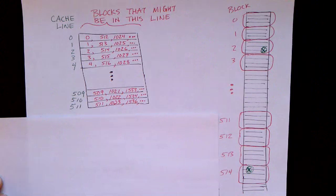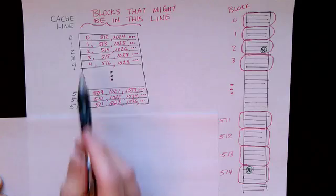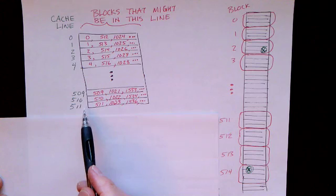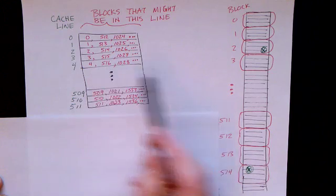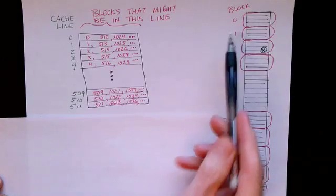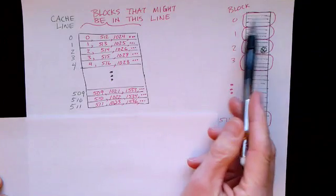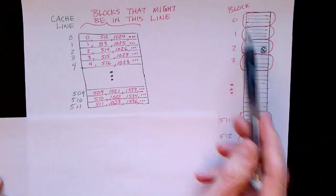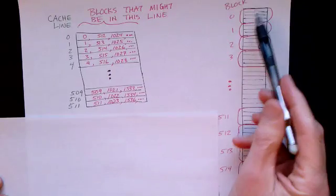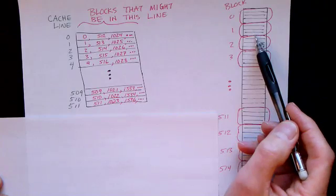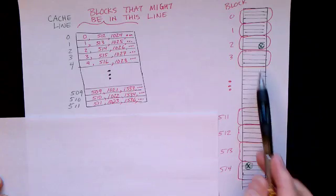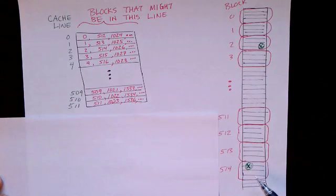Let's continue with our example where we're using a cache that has 512 lines. So, over on the right-hand side, I'm depicting main memory. And every chunk of 64 bytes is a block of main memory. So the idea is that there are 64 bytes here. There's another 64 bytes here. And then there are 64 bytes in each one of these chunks.